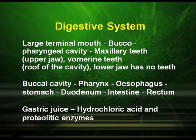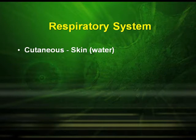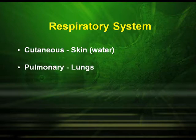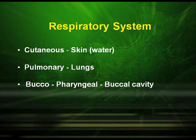The gastric juices released are hydrochloric acid and proteolytic enzymes. Frogs carry out three types of respiration: respiration through the skin is called cutaneous respiration; through the lungs it is pulmonary respiration; and through the buccal cavity it is called buccopharyngeal respiration.